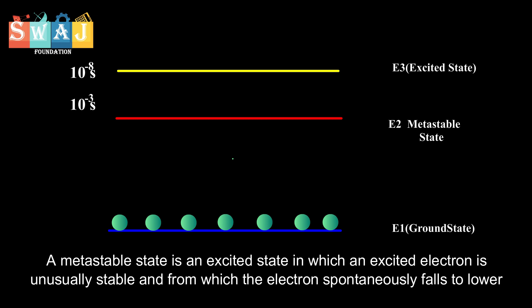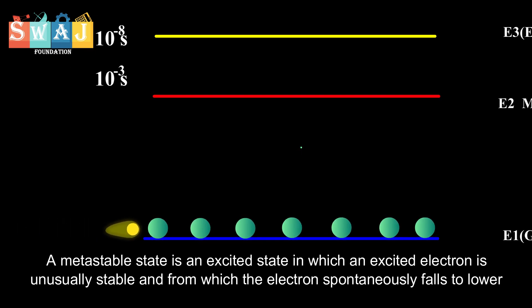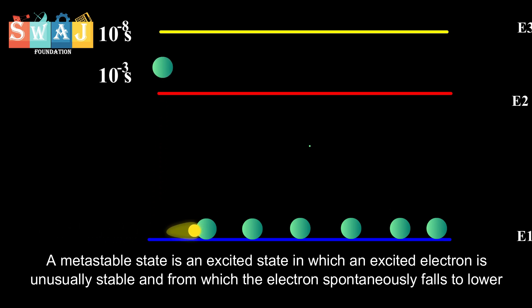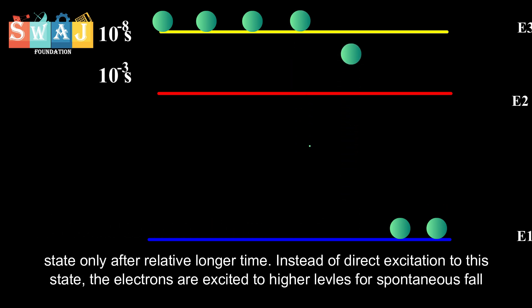A metastable state is an excited state in which an excited electron is unusually stable and from which the electron spontaneously falls to a lower state only after a relatively longer time.